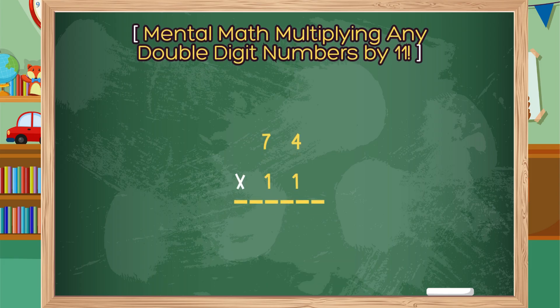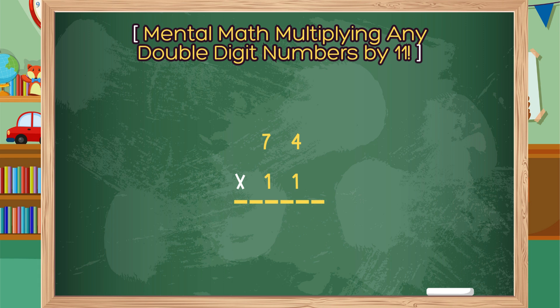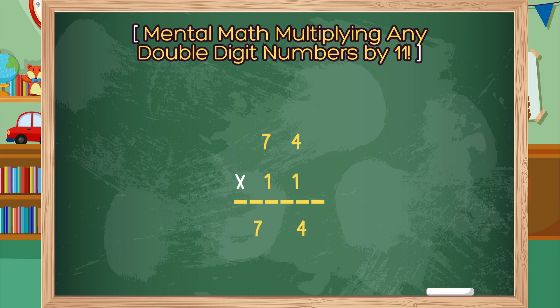Let's try another one. 74 times 11. If the sum of 7 plus 4 is 10 or more, then carry the digit over to the leftmost digit and add it. Step 1: Separate the digits of 74 and place them in the product area. Step 2: Add 7 and 4 together, which equals 11.